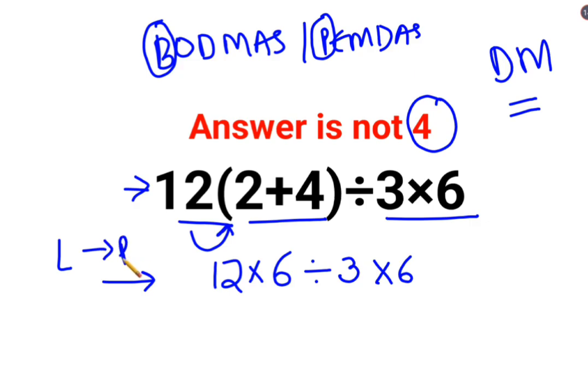Whatever operation happens first on your left hand side has to be done first. So 12 multiplied by 6 is 72 divided by 3 multiplied by 6.